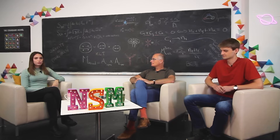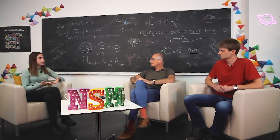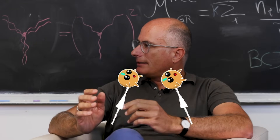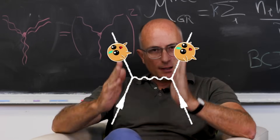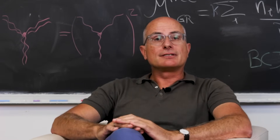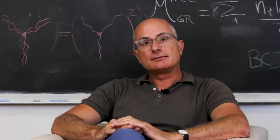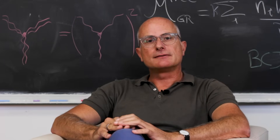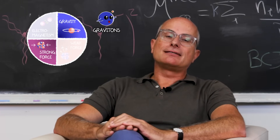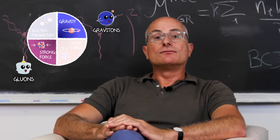But gravity and the strong force seem very different. So Jan, how are they related and why is this relation called the double copy? Well, in our understanding of nature, fundamental forces are mediated through the exchange of particles. So the relation between the strong force and gravity translates to a relation between these elementary particles. In the case of gravity, they're called gravitons. In the case of the strong force, they're called gluons.